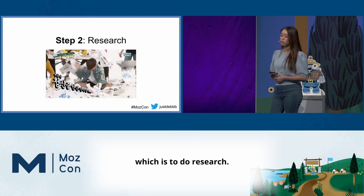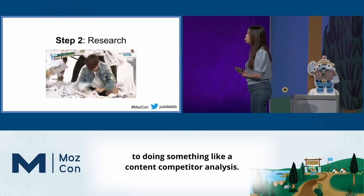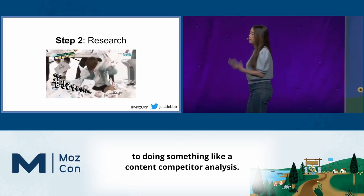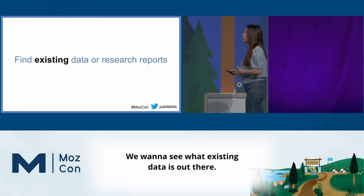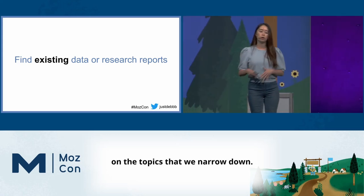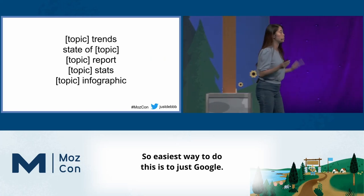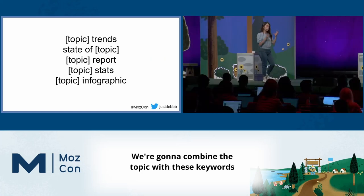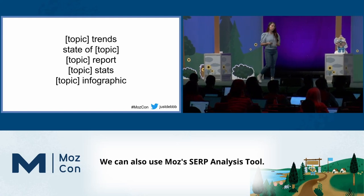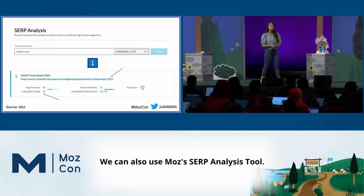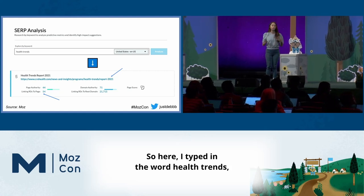This step is probably going to be pretty similar to doing something like a content competitor analysis. We want to see what existing data is out there — what research reports exist on the topics that we narrowed down. The easiest way to do this is to just Google. We're going to combine the topic with keywords and see what shows up. We can also use Moz's SERP analysis tool. Here I typed in the words 'health trends.'